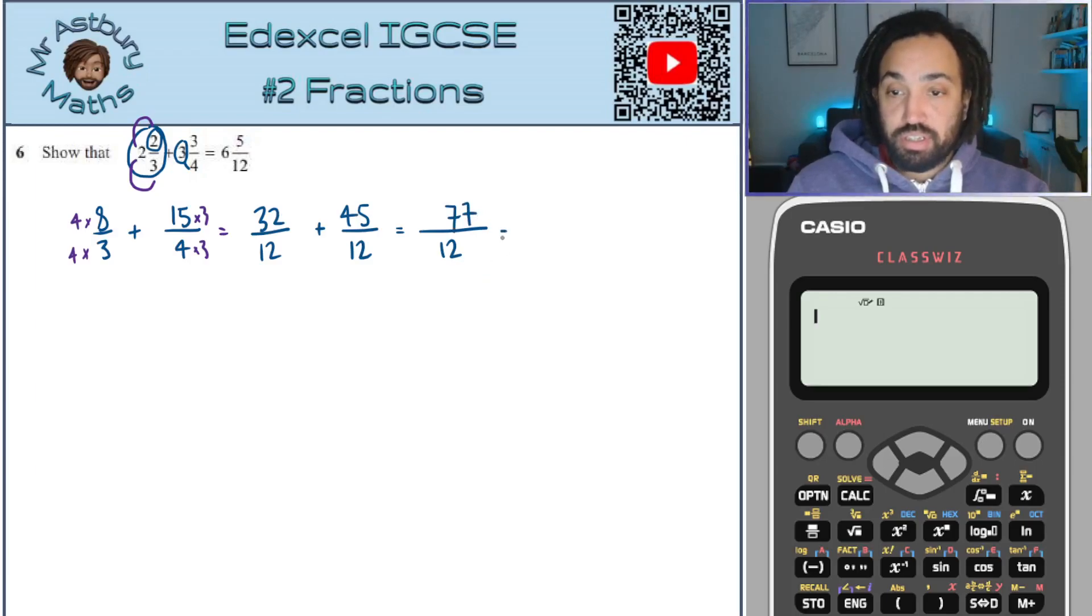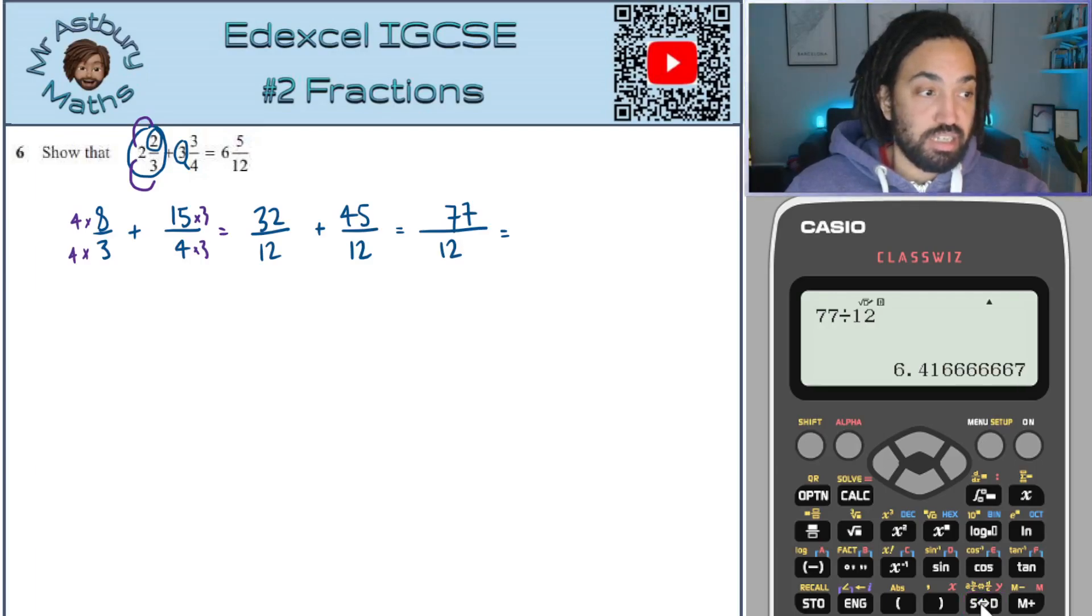So 32 plus 45 is 77. And that looks very good. How many times does 12 go into 77? Well, if you're not sure, you can always just use your calculator. You can do 77 divided by 12 and then press this button here, this S to D button.